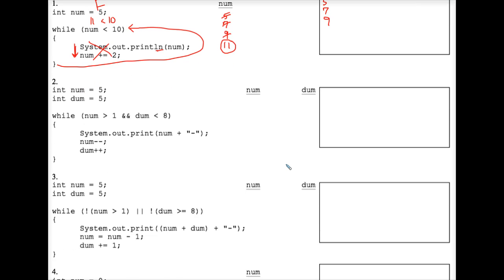Number 2. Two integer variables are being declared and initialized. We have a more complicated control expression. Let's evaluate this in pieces. 5 is greater than 1, so that's true. Dum is less than 8, so that also is true. This means and in the Java language, similar to the word and in Visual Basic. So if you have a true and with a true, overall, that makes a true, and therefore we do go through the while loop the first time.